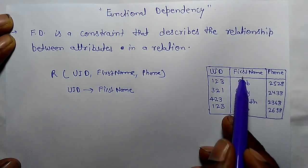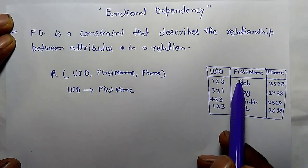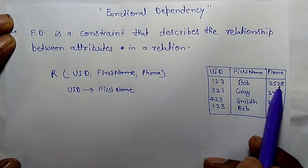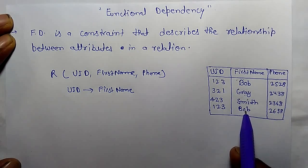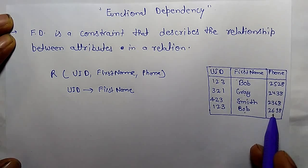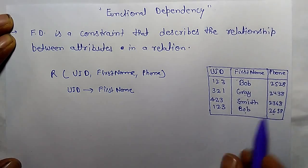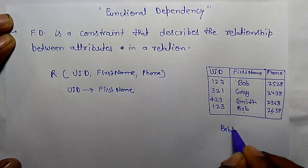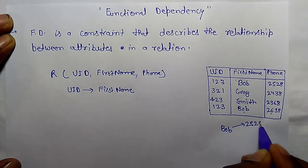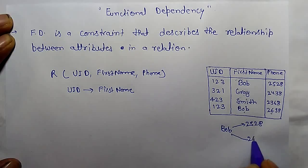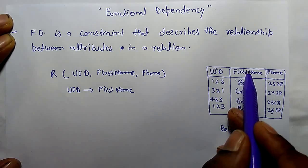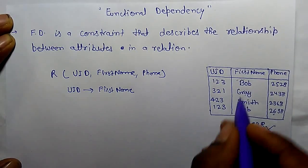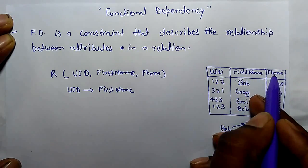Now check whether first name uniquely determines phone number or not. Bob has one phone number, 2528. Gray uniquely determines another phone number, Smith another phone number. Again, we got Bob, and that determines a different phone number. So it means Bob determines 2528, and again it determines 2698. So phone number attribute is not uniquely determined by first name. That's why first name functionally cannot determine phone number.